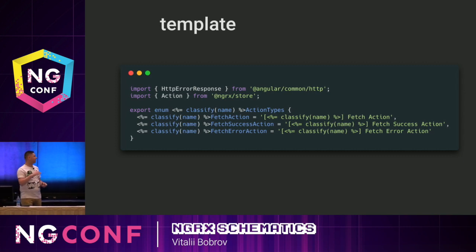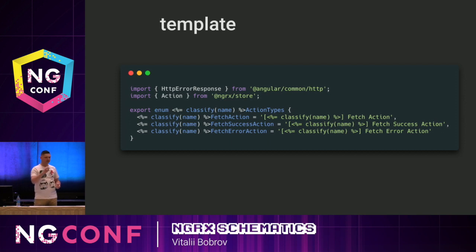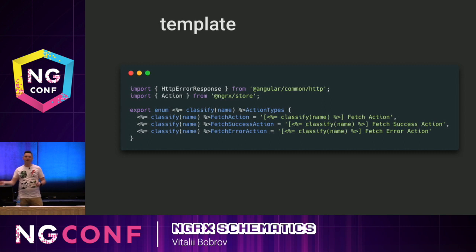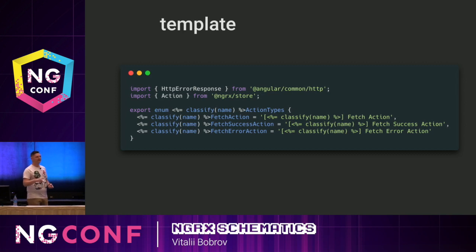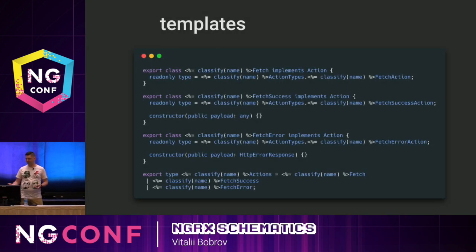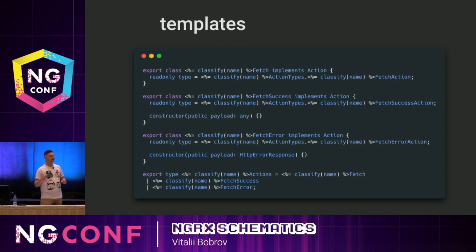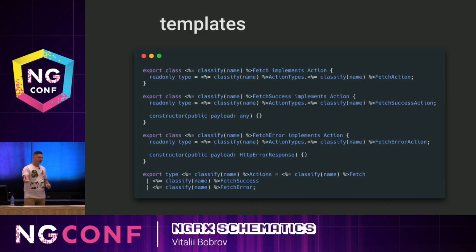And we're going to do the same for our action file and action specification file for tests. So let's look at our template. I added the HttpErrorResponse interface for our fetch error action. Then I'm going to define our fetch action types: fetch action, fetch success action, and fetch error action. All of them will be prefixed by the name we specify as an argument when we run this schematic. Later on in the template file, we're creating three action creator classes for each of our actions, and we expose an alias type to use in our reducer and so on.